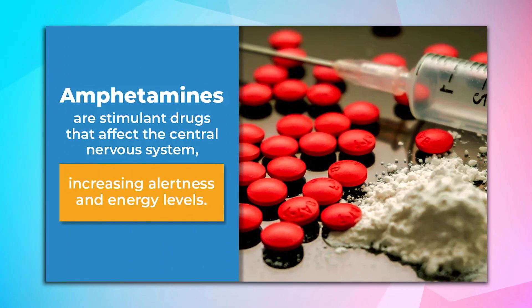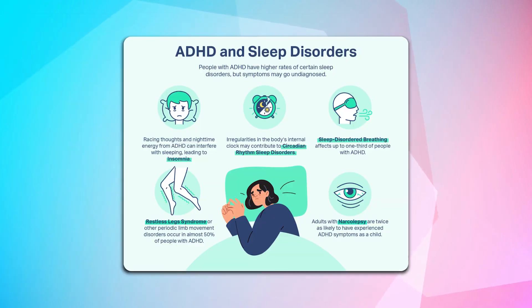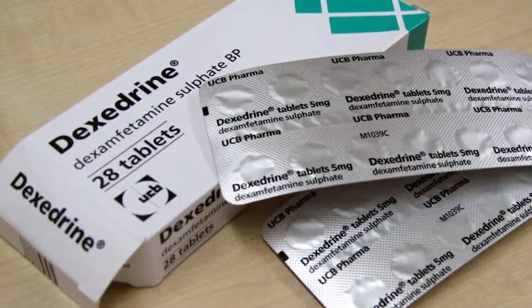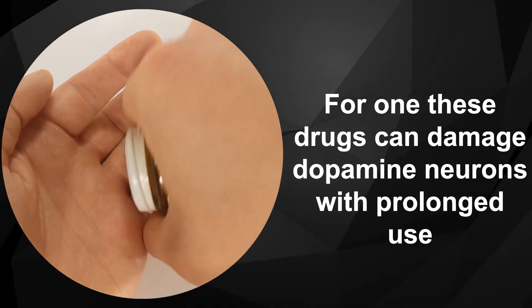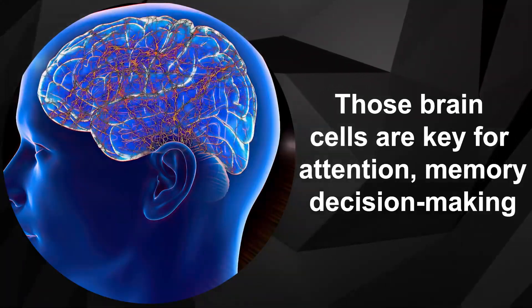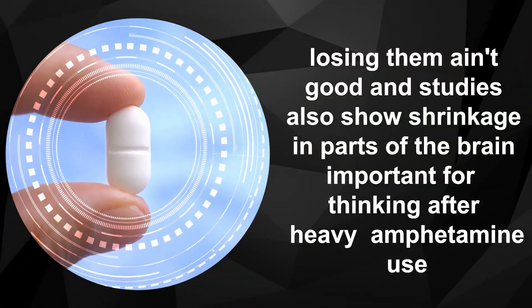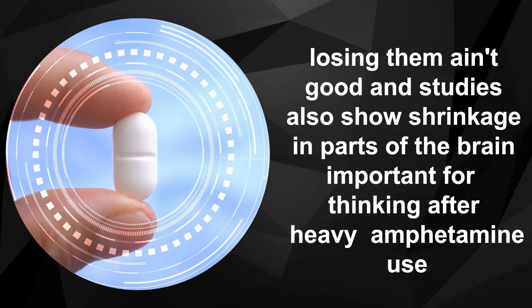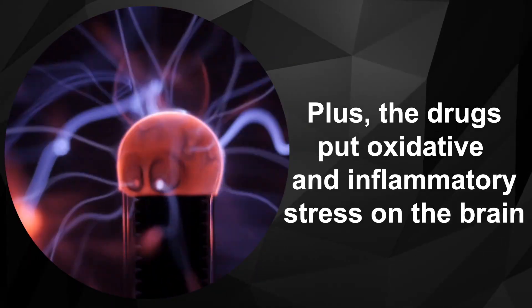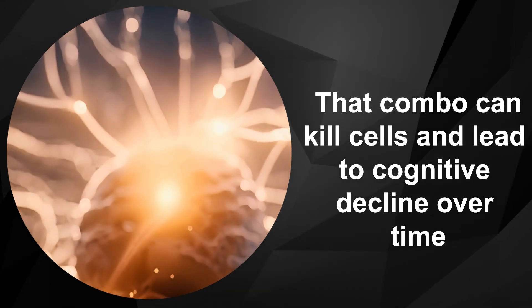Five, amphetamines. Amphetamines are stimulant medications used primarily to treat attention deficit hyperactivity disorder, ADHD, and narcolepsy. Common examples include Adderall and Dexedrine. For one, these drugs can damage dopamine neurons with prolonged use. Those brain cells are key for attention, memory, decision-making. Losing them isn't good, and studies also show shrinkage in parts of the brain important for thinking after heavy amphetamine use. Plus, the drugs put oxidative and inflammatory stress on the brain.